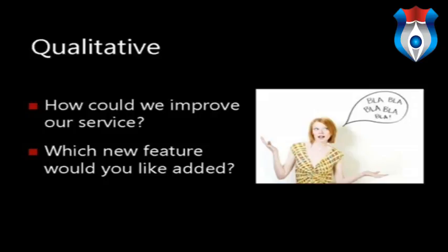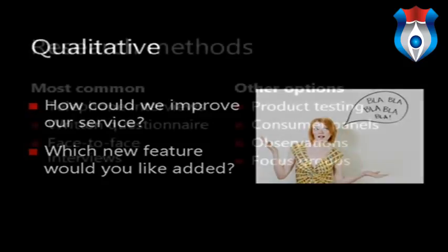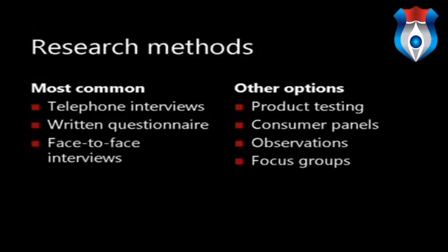Depending on your objective, you'll want to use either a quantitative or qualitative approach, or a combination of both. The main research tools are telephone interviews, written questionnaires (often online nowadays), and face-to-face interviews. Other methods include product testing, consumer panels, observation, and focus groups. Written questionnaires are the most commonly used research tool and their use is widespread among all types of organization. They can be administered by the researcher or self-administered, received and returned by post, completed online or in store.